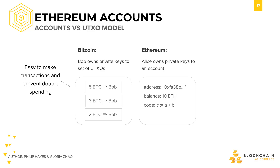In Bitcoin, private keys prove ownership of UTXOs. When you spend Bitcoin, you spend from previous transactions. And to calculate your current balance, you have to sum up all the UTXOs that you own. The reason Bitcoin uses UTXOs is that they make it easy to make transactions and prevent double spending.